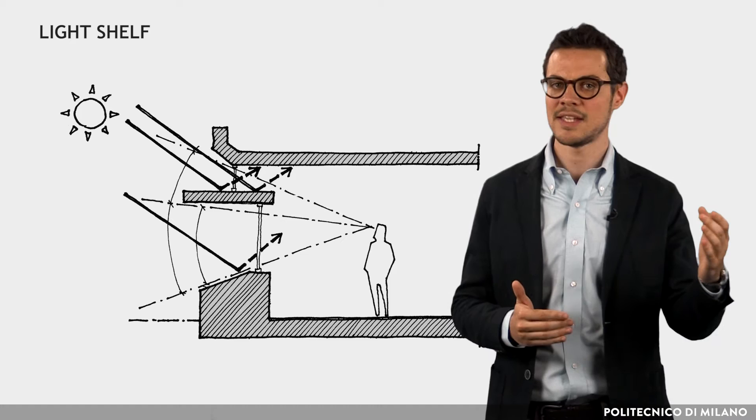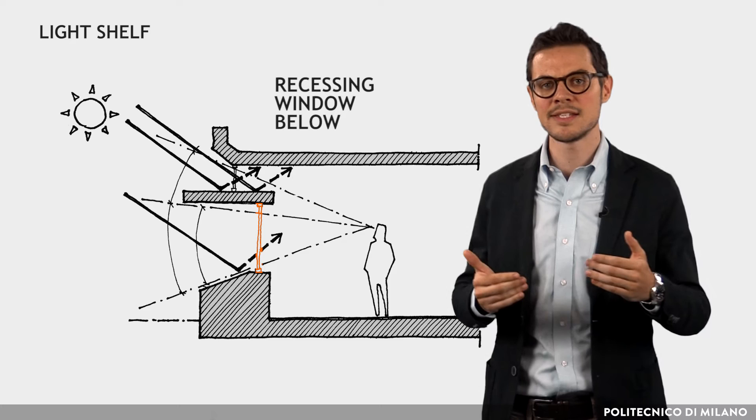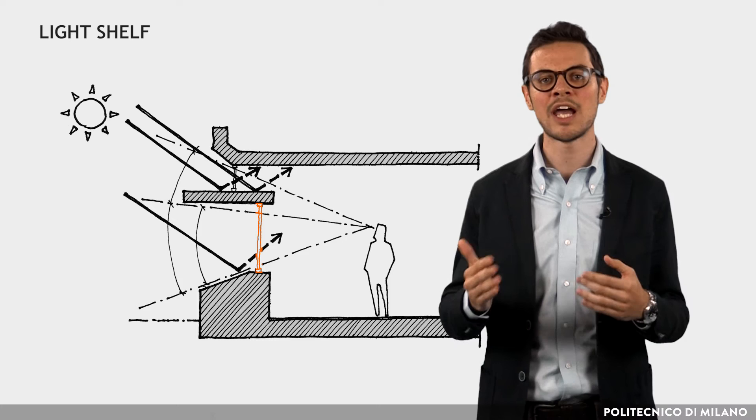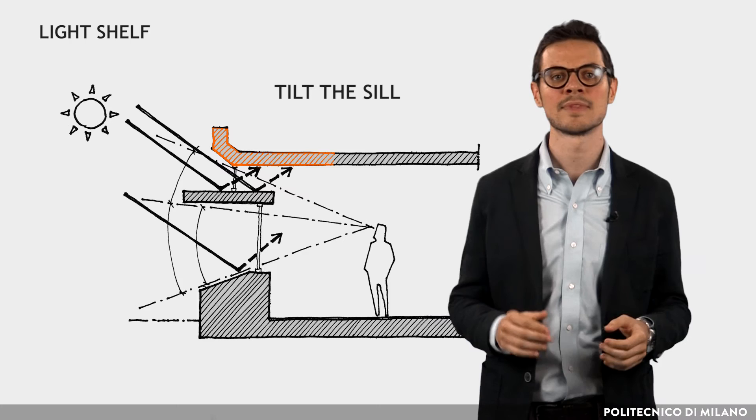If the optimum depth of the external light shelf is excessive in relation to other needs, the same results can be obtained by recessing the windows below. With this type of solution, the contribution of natural light can be further increased by appropriately tilting the sill.